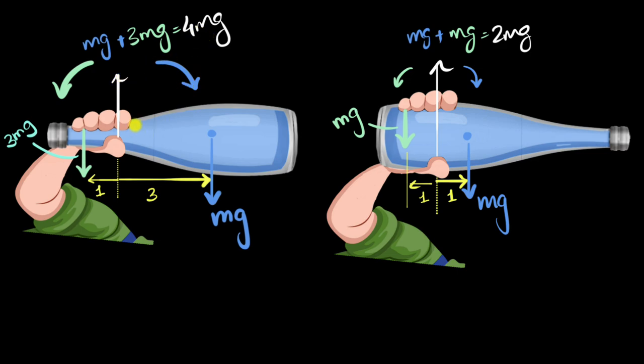This means from Newton's third law, over here the bottle is pushing on your thumb downwards with four times the weight. And over here the bottle is pushing down your thumb with just twice the weight. Therefore right in front of your eyes, can you now see why this appears heavier than this?